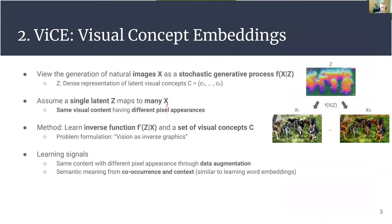Our method is formulated around viewing the generation of natural images as a stochastic generative process that takes a set of visual concepts represented in a dense representation map Z, which then generates different pixel appearances of the content. The main point is that we assume a single latent Z tensor maps to several different images — basically, the same visual content exists in images that have different pixel appearances. Our method is grounded in learning the inverse function that goes from latent concepts to the actual pixel image, as well as learning the set of visual concepts themselves. This is part of the general problem of vision as inverse graphics.